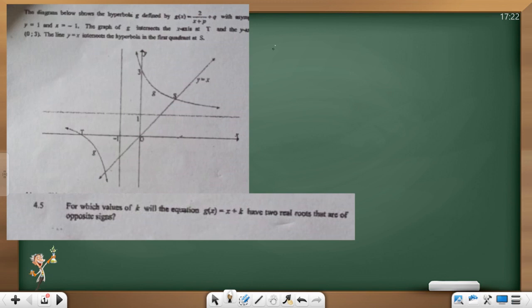We have a hyperbola, and our hyperbola is given as g of x equals 2 over x plus p plus q. And we are given asymptotes as y equals 1 and x equals negative 1. So it means this equation can be written, therefore, like that.